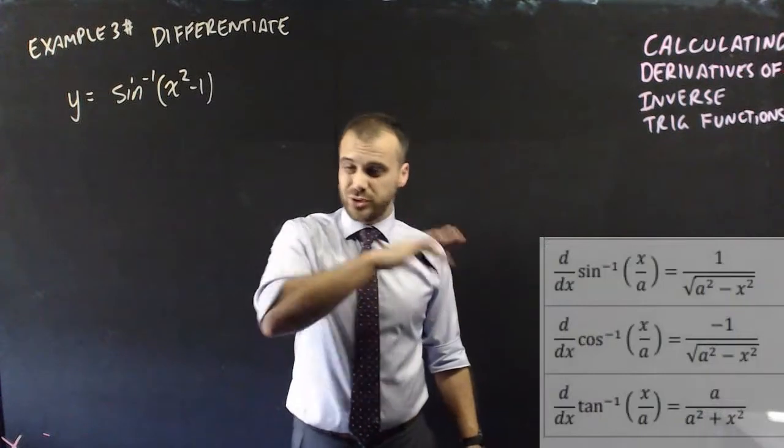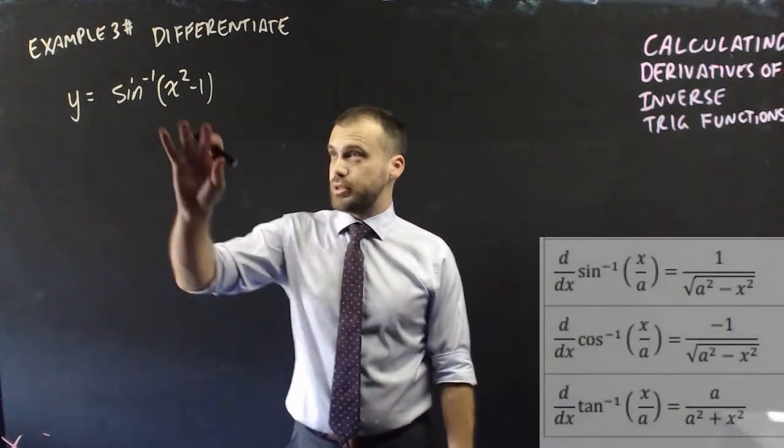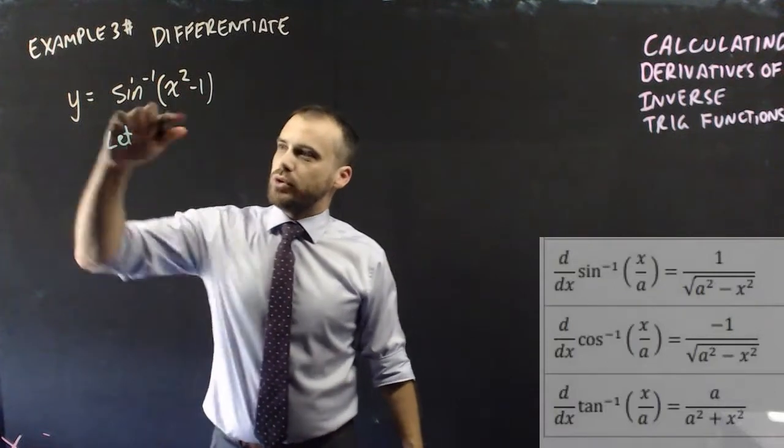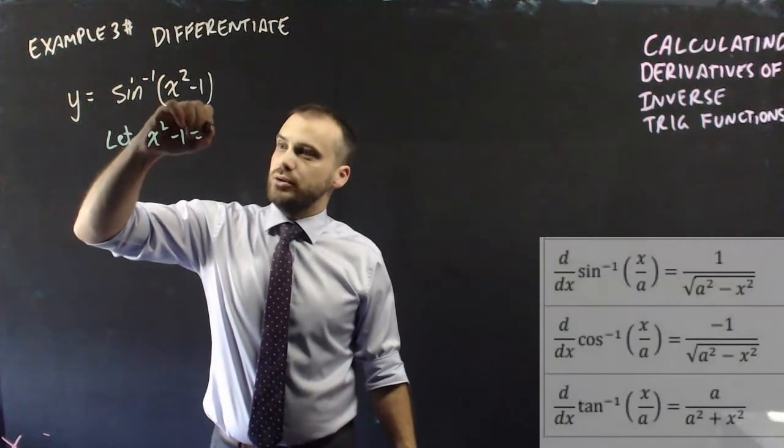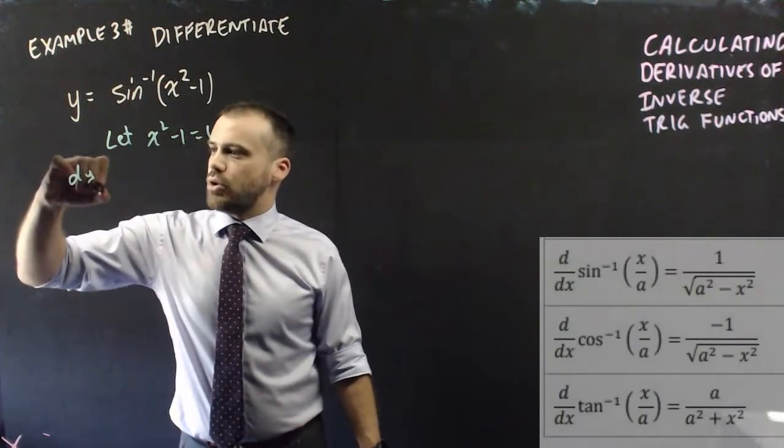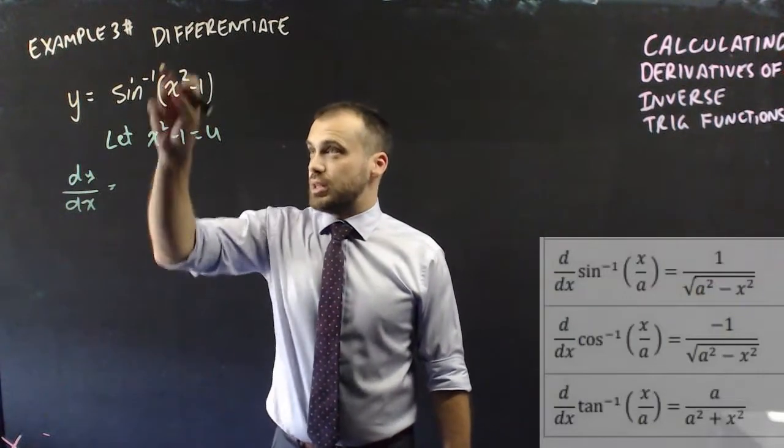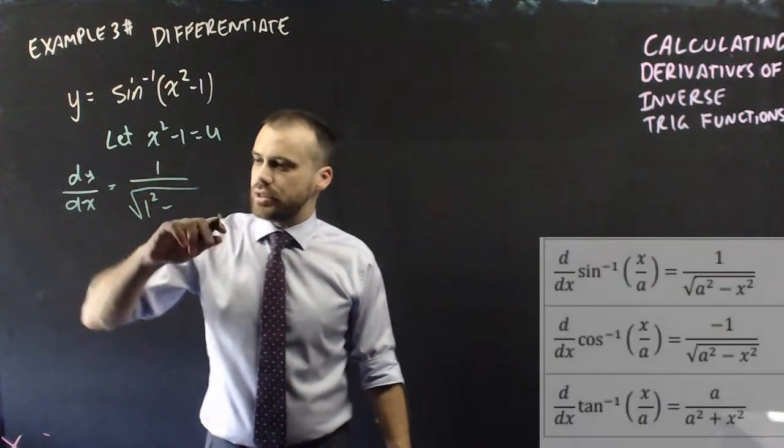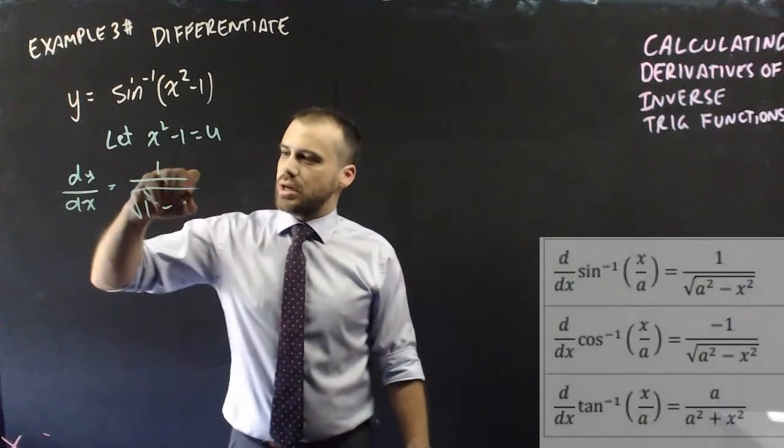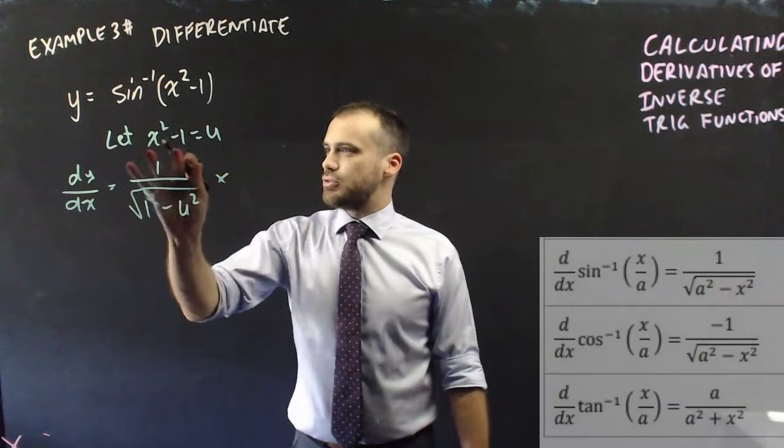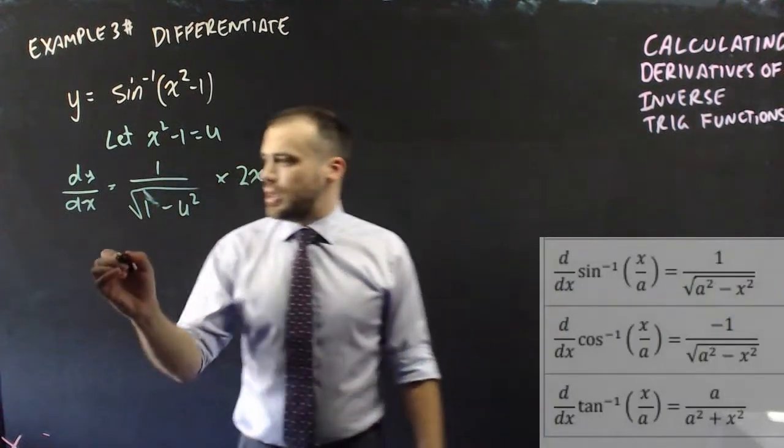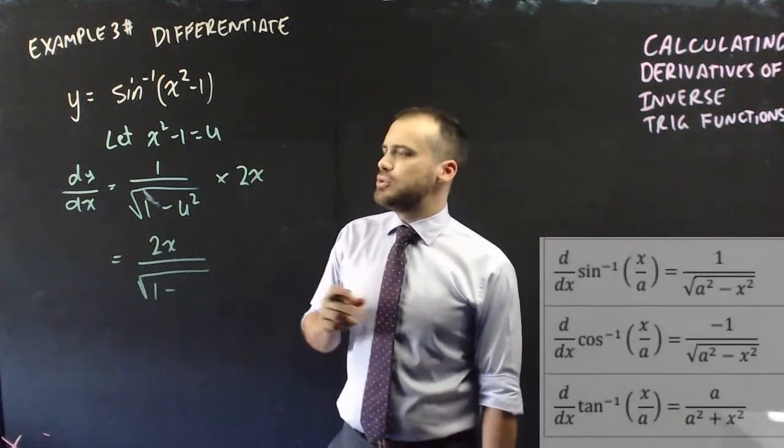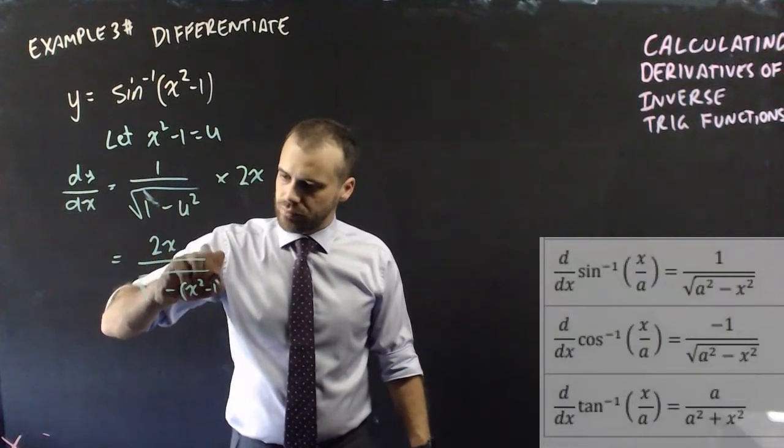Now with the previous example, you could choose to use the chain rule or use the formula directly. Here you've really got to use the chain rule because we don't have a formula for what if x squared minus 1 is in there. So we let the thing that we want to be u be u, and then we find our derivative. So the derivative of y with respect to x will be equal to, now that's u in there now, so we have 1 over square root 1 squared minus, which is just 1, 1 minus u squared, and then we multiply that by the derivative of that, which is just 2x.